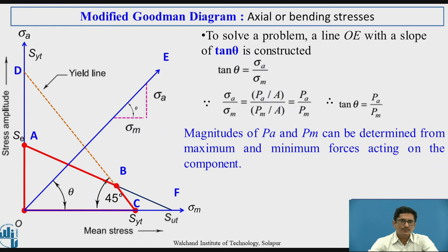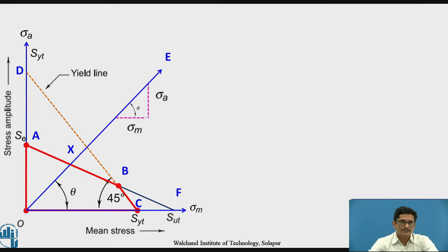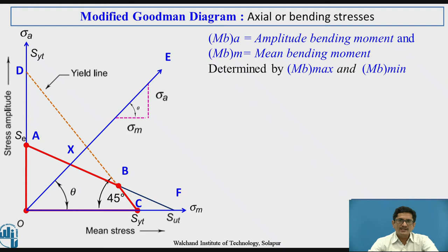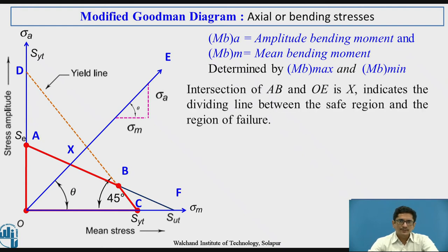The magnitudes of PA and PM can be determined from the maximum and minimum forces acting on the component. Tan theta is also equal to MBA divided by MBM, where MBA is the amplitude bending moment and MBM represents the mean bending moment. The intersection of line AB and line OE is point X, which indicates the dividing line between the safe region and the region of failure.